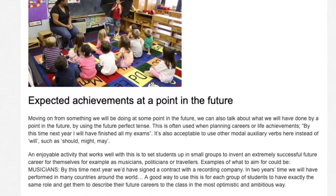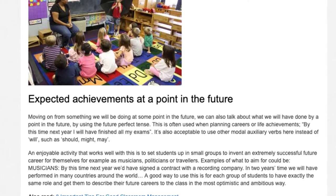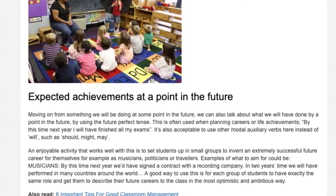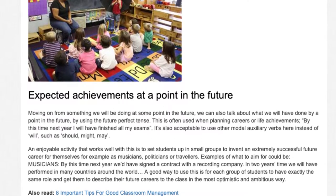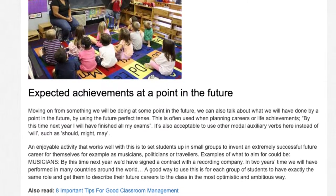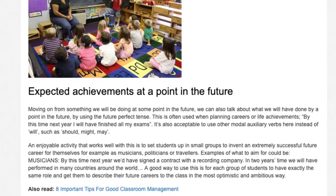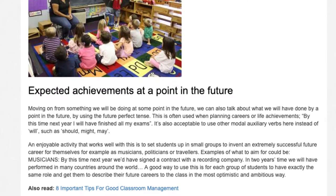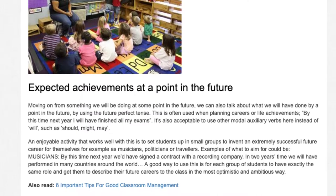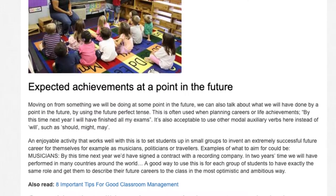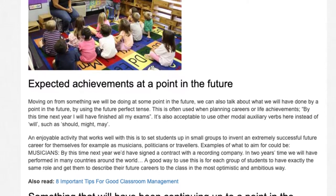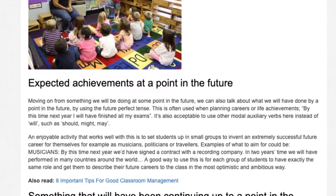Examples of what to aim for could be — Musicians: 'By this time next year we will have signed a contract with a recording company.' 'In two years' time we will have performed in many countries around the world.' A good way to use this is for each group of students to have exactly the same role and get them to describe their future career to the class in the most optimistic and ambitious way.